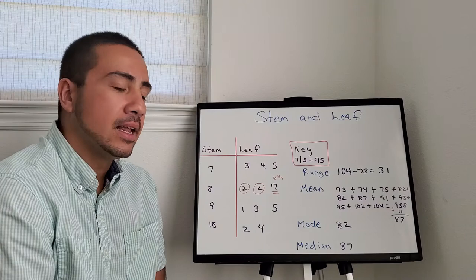And last but not least, the median. If there's 11 numbers, that means our sixth number is the median. In this case, 87. All right, that's it for today.